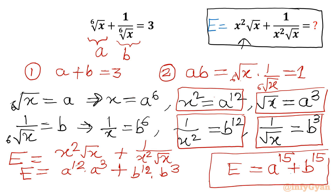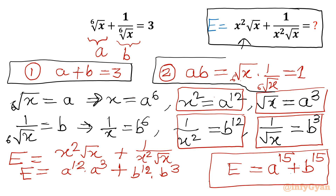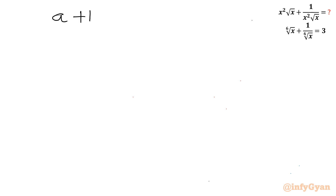So ultimately we are looking for E = a¹⁵ + b¹⁵. We have to calculate a¹⁵ + b¹⁵ from our system of equations: equation 1: a + b = 3, and equation 2: a·b = 1. Let us solve.